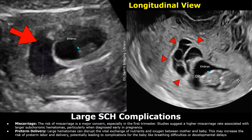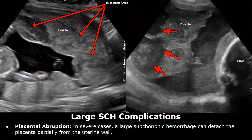Now we will look at complications associated with a large hemorrhage. A large hemorrhage increases the risk of miscarriage, especially in the first trimester. The next complication is preterm delivery — a premature delivery — because a large hemorrhage can disrupt blood flow to the fetus, which ultimately leads to premature delivery. In a severe case of hemorrhage, placental abruption can occur, in which the placenta partially detaches from the uterine wall. It is a very serious and potentially fatal complication of pregnancy.